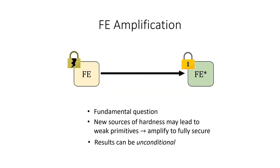Returning to FE amplification, our goal is to reduce the distinguishing advantage of the adversary. For example, we might want to take an FE scheme which is secure with probability only one-half and use it to build an FE scheme which is fully secure. Apart from being a fundamental question in its own right, this is especially useful for FE since we do not currently know how to build the most general version of FE for all functions from any standard assumptions. Amplification results mean that if we can show how to construct even a weakly secure FE scheme from standard assumptions, then this would imply the existence of a fully secure FE scheme from standard assumptions. Notably, in amplification, unlike in many other areas of cryptography, the results can be unconditional, and the security of the fully secure FE scheme depends only upon the weak security of the weaker FE scheme.